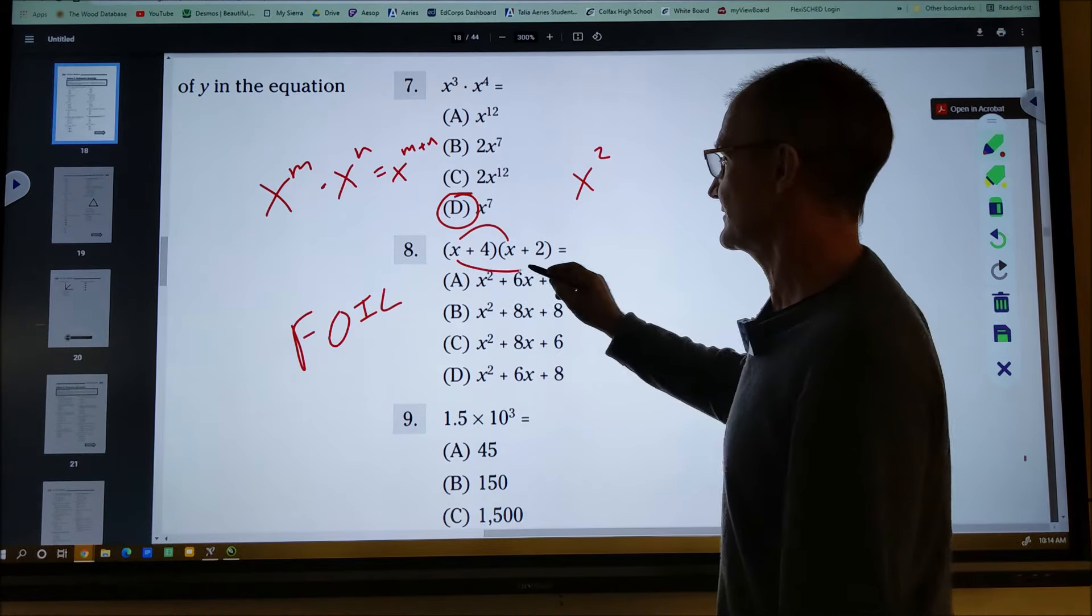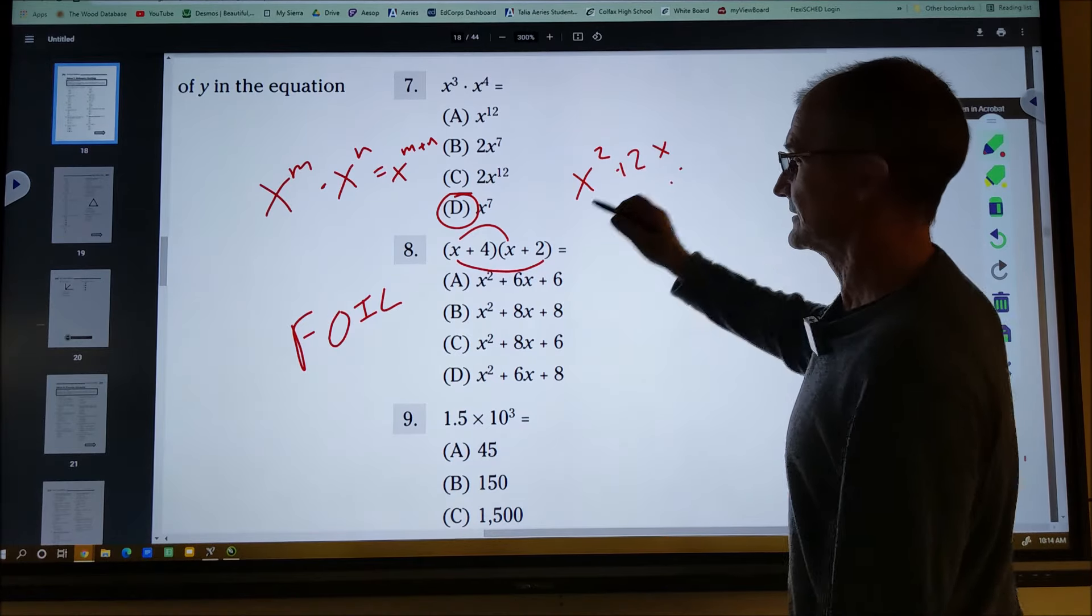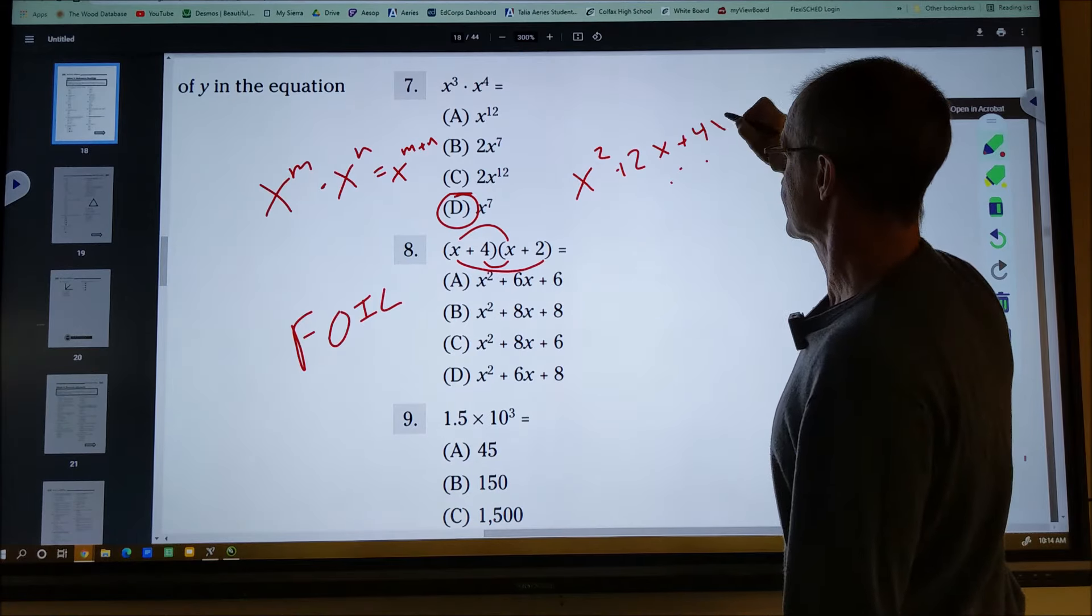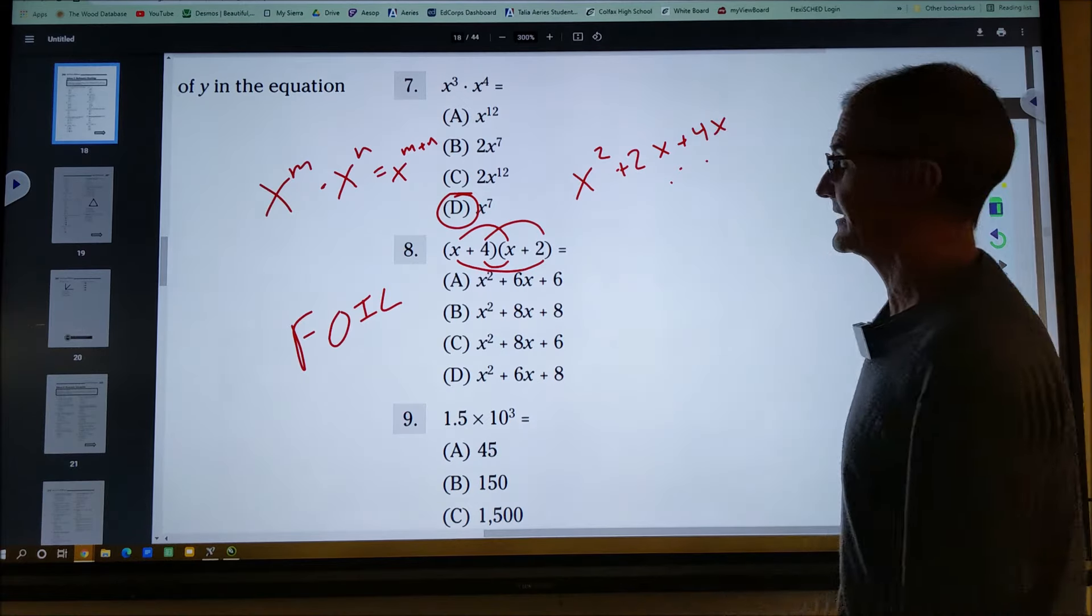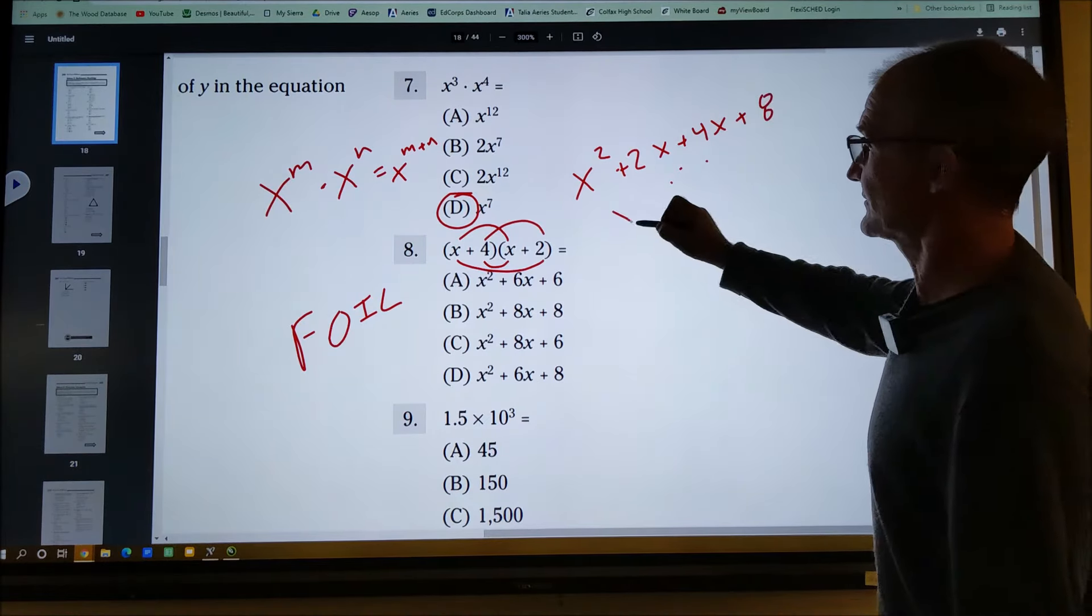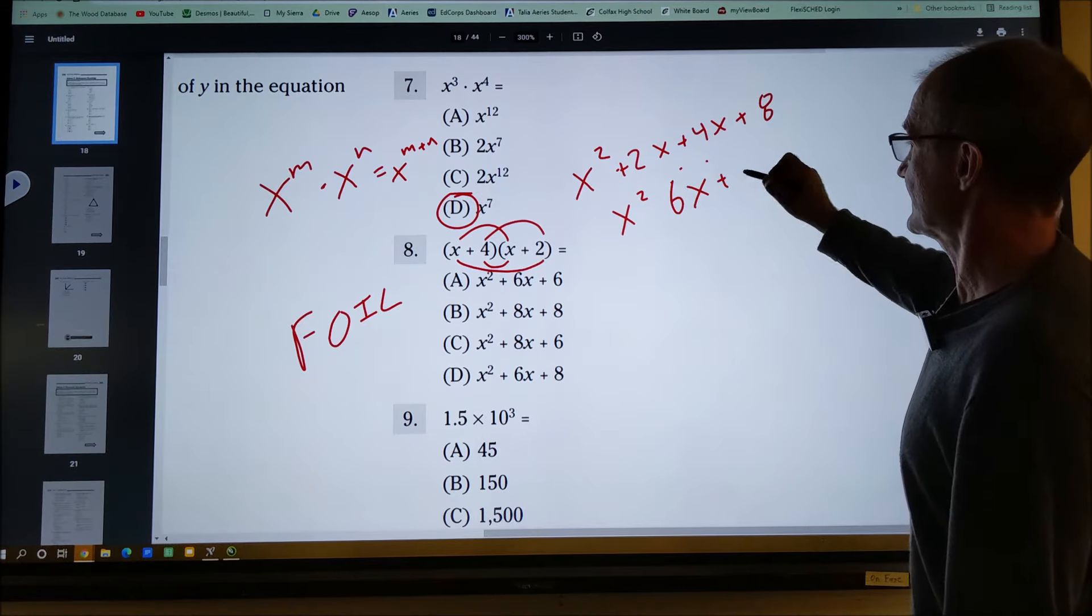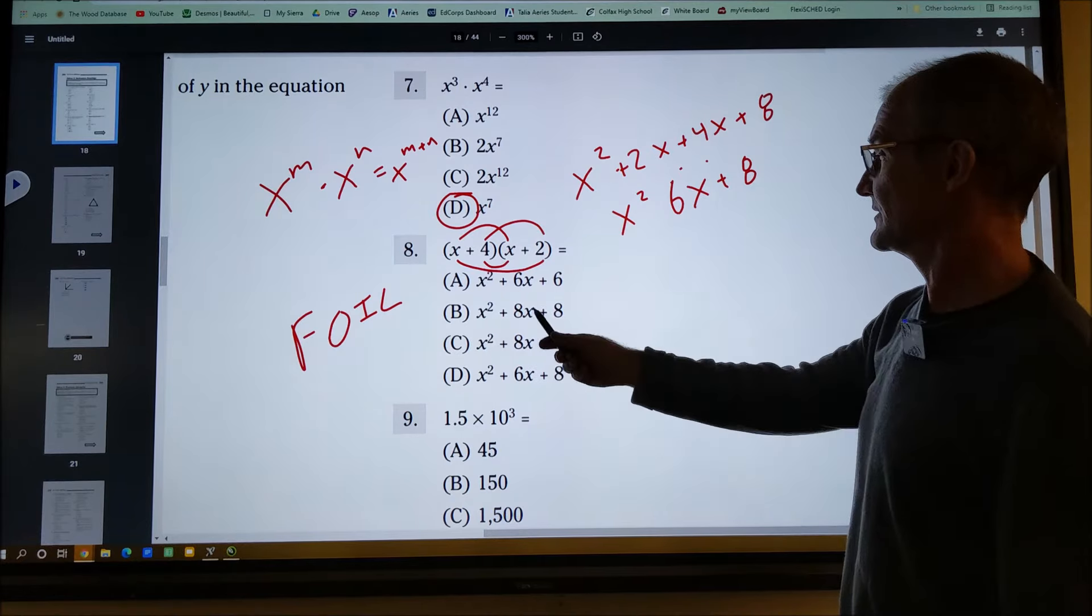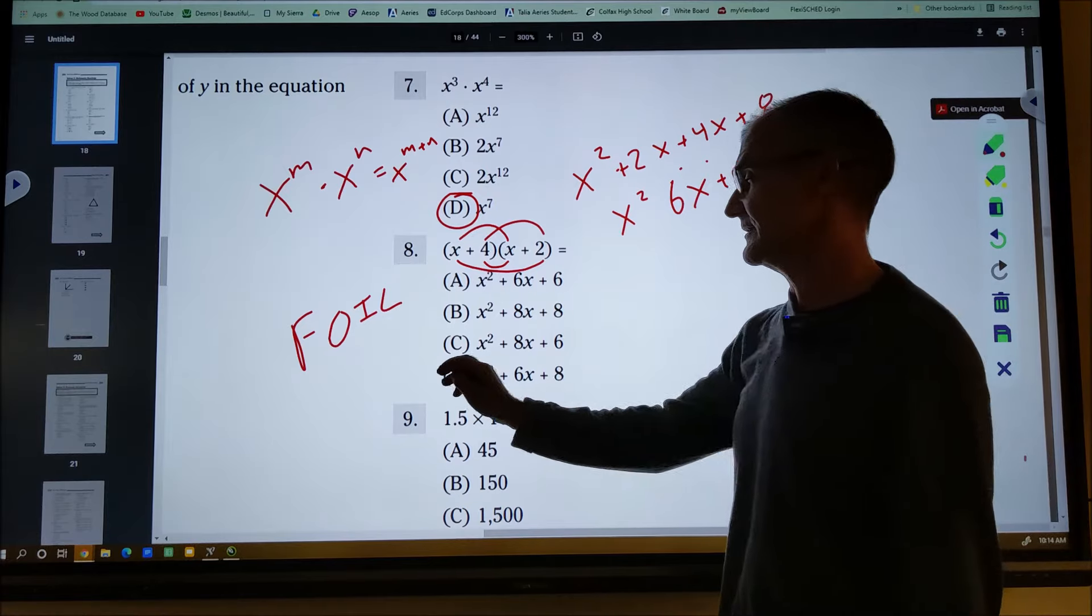The outer terms together, x times two is two x. The inner terms together, four x. And then L, the last, is the last terms together. Four times two is eight. So I have x squared, two x plus four x is six x plus eight. And I have x squared plus six x plus eight right here. Answer D.